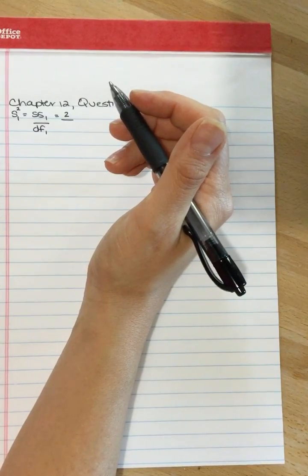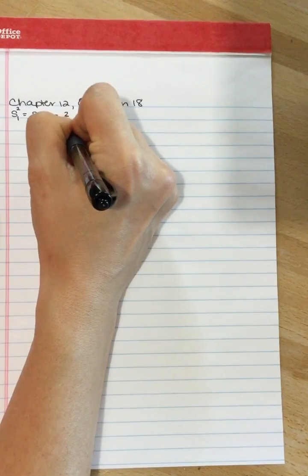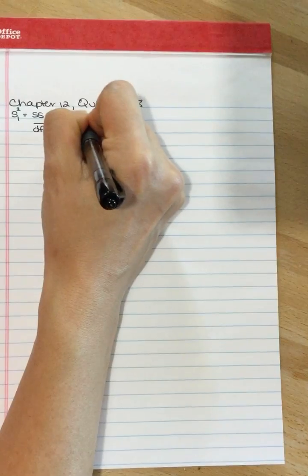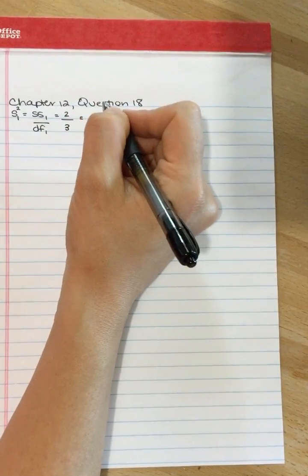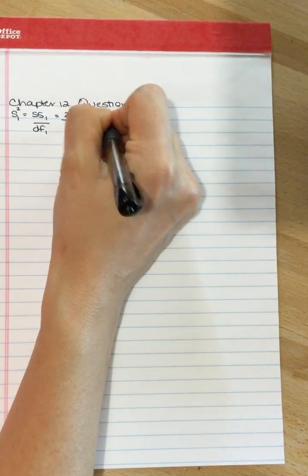So we've got four values for each treatment. So we're going to divide by N minus 1, so 4 minus 1. We divide by 3, and that is 0.67.